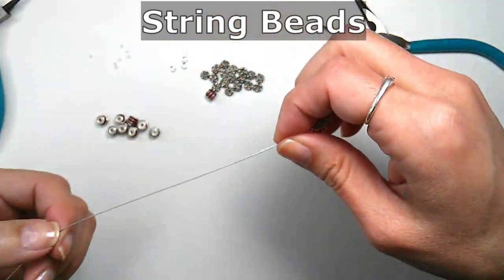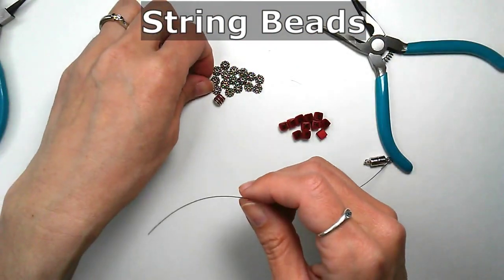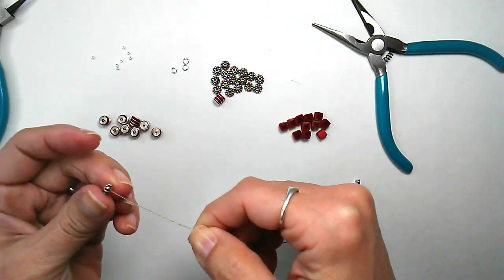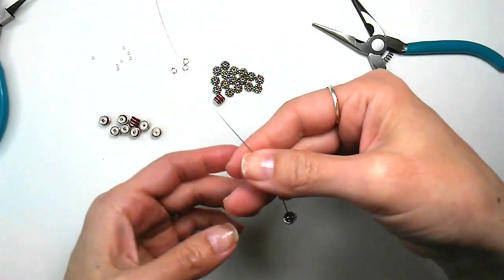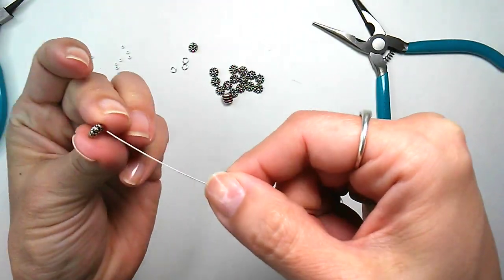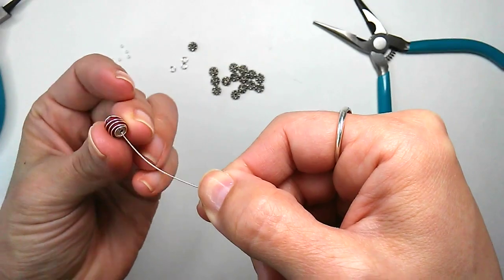Now we're ready to put on the beads. Starting with a spacer bead. We'll do a pattern of spacer, square, spacer, tight coil.